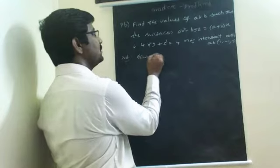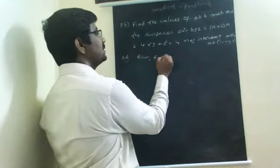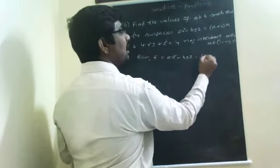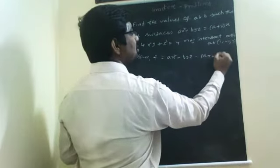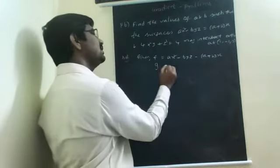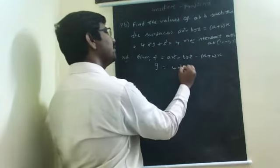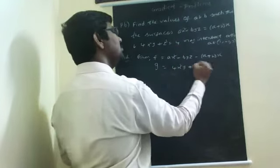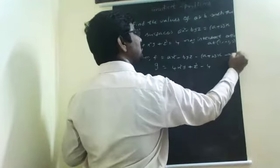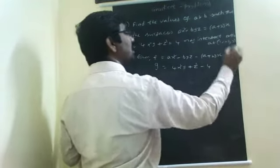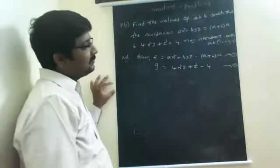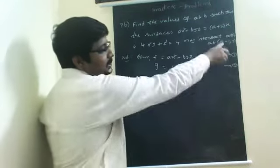So, let F be: F = A x squared minus B y z minus (A plus 2) into x. And surface G is: G = 4x squared y plus z cubed minus 4.